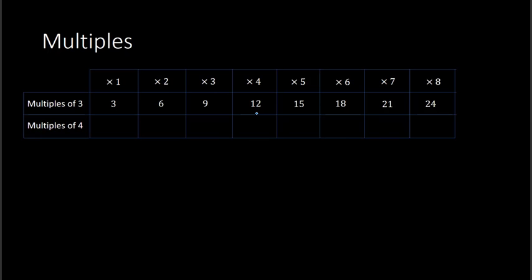If we do the same thing with multiples of 4: 4 times 1 is 4, times 2 is 8, 4 times 3 is 12, 16, 20, 24, 28, 32, etc. Those are all multiples of 4, because we're multiplying by numbers to get that new number.